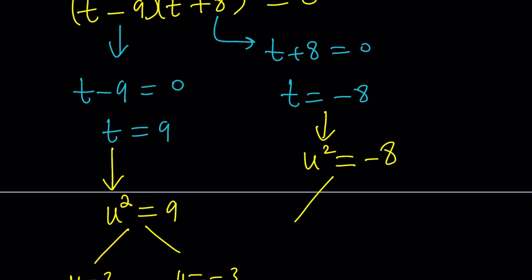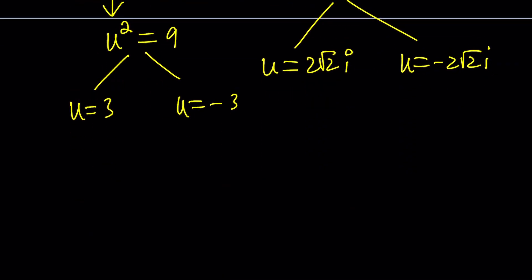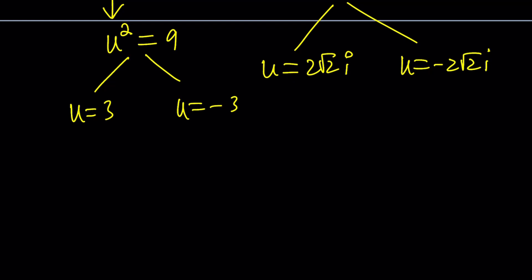It gave us non-real solutions or complex non-real solutions. But we can still write down the solutions. If you square root both sides, you're going to get 2 root 2i and negative 2 root 2i. And obviously, those u values are also valid because they are complex, okay? Great. We still have to back substitute, right? What is u?